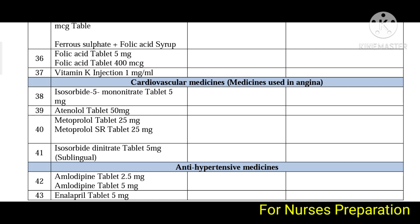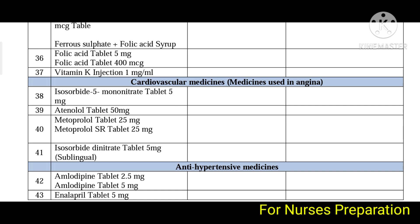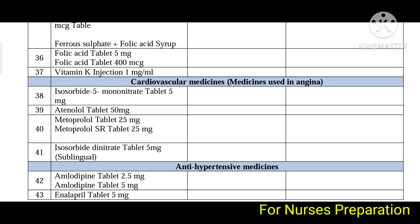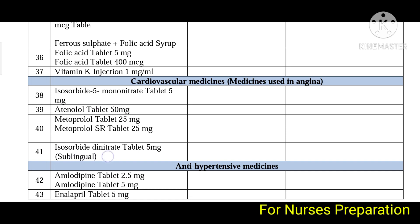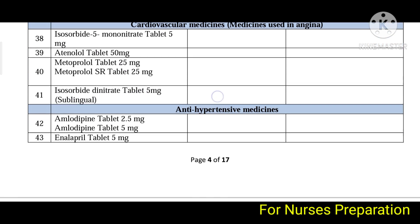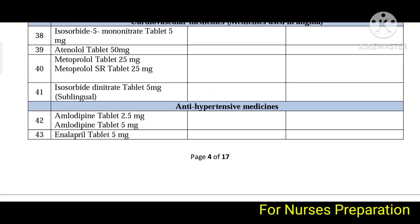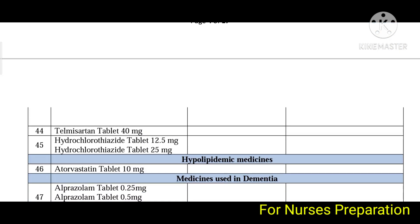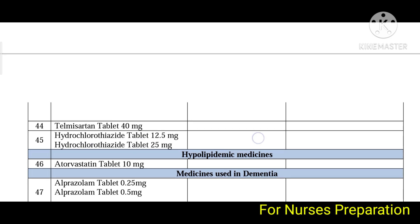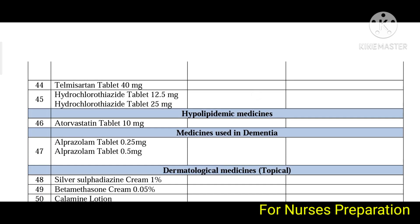Next are cardiovascular medicines. Medicines used in angina include isosorbide mononitrate tablets, atenolol tablet, metoprolol tablet, and isosorbide dinitrate tablets given by the sublingual route. For antihypertensives to treat hypertension: amlodipine, enalapril, telmisartan, and hydrochlorothiazide are used and included in this list.